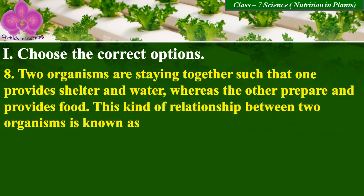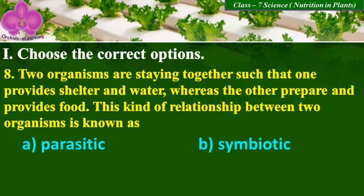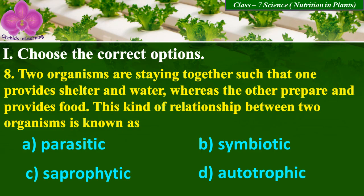Two organisms are staying together such that one provides shelter and water whereas the other prepares and provides food. This kind of relationship between two organisms is called — A: parasitic, B: symbiotic, C: saprophytic, and D: autotrophic. Answer: B, symbiotic.